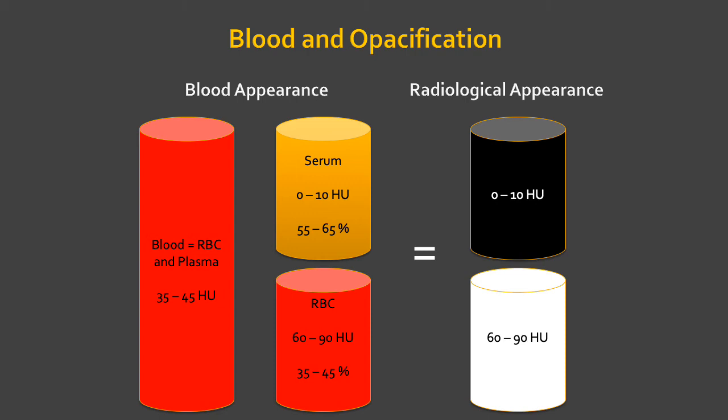Radiologically, 0 to 10 Hounsfield units shows no density, whereas red blood cells on their own show a density of 60 to 90 Hounsfield units. This is important because this is where hyperdensity is seen in the brain for an intraparenchymal bleed — the red blood cell is unable to recirculate in the blood, there is no plasma present, so it is localized in tissue, which is why we get this high density.